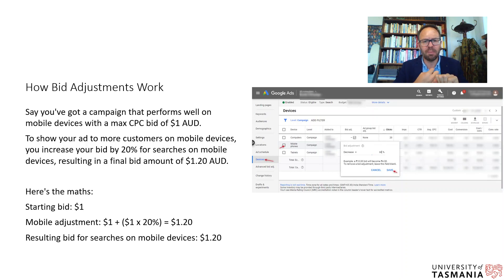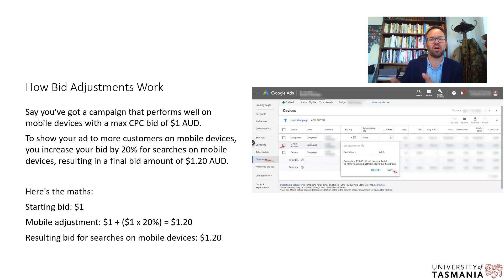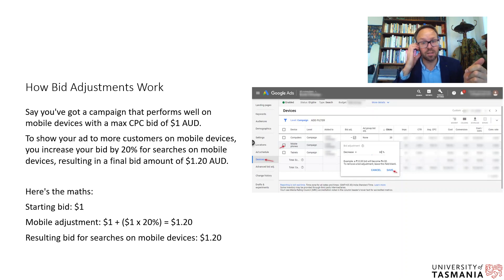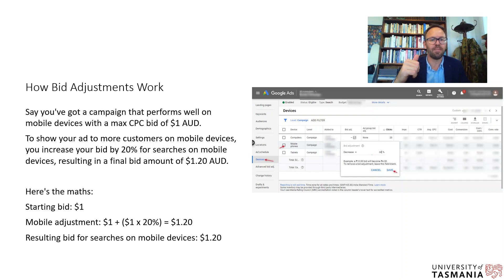For example, if a campaign performs well on mobile devices with a maximum CPC bid of $1, and you want to show your ad to more customers on mobile, you can increase your bid by 20% for searches on mobile devices. This results in a final bid of $1.20. So you're prepared to pay more for that same ad to reach mobile phone users.